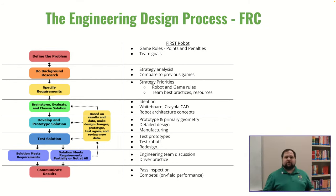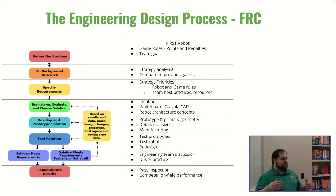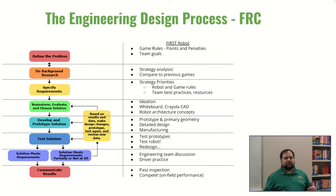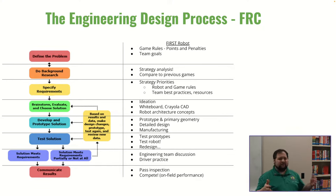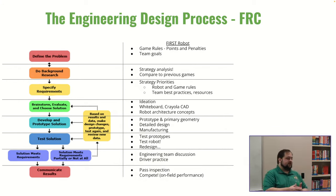Then we do prototyping — are there questions we need to answer about how game pieces behave or how the field functions? We also lay out primary geometry, which some teams call master geometry or core geometry. It's basically the high-level 2D CAD sketch, usually to scale, showing everything the robot is going to be. Then we get into detailed design — all the 3D parts, how everything fits together — and come out with a final CAD model to release for manufacturing.